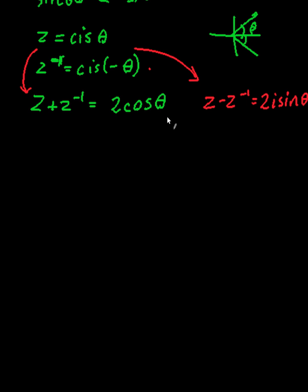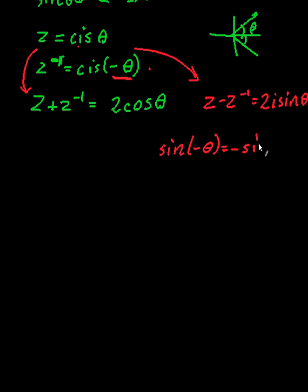The reason this works is that cos(−θ) equals cos θ because cosine is an even function, and sin(−θ) equals −sin θ because sine is an odd function. I'll leave proving these two identities as an exercise.